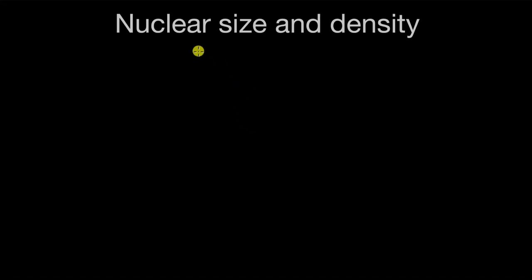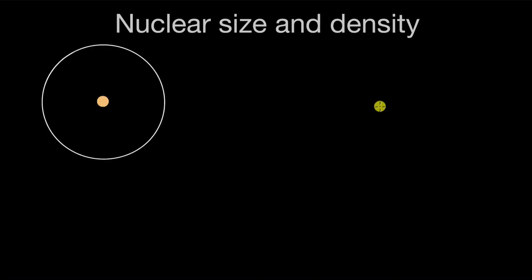In this video we will talk about nucleus size, particularly nuclear radius and its density. From Rutherford's alpha scattering experiment, where he took a thin foil of gold, we can see one gold atom over here with its nucleus right at the center. This thin foil was bombarded with alpha particles.